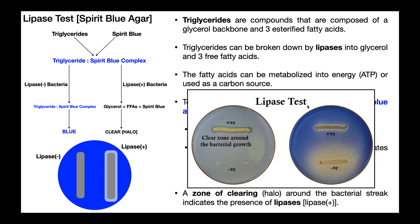Here's another look at the lipase test. This one on the right is specifically the Spirit Blue agar. The top streak is the positive lipase species — you can see there is a clear zone of clearing or halo around that streak. The negative one below it is cloudy around the streak due to some growth, but there is no halo. Over on the left, this is another type of agar that can be used to test for lipases — it just doesn't have the indicator. Even so, the positive species on the top has a visible halo, and the negative species on the bottom has no halo. In either case, if you see that halo, you know you have a positive lipase organism.